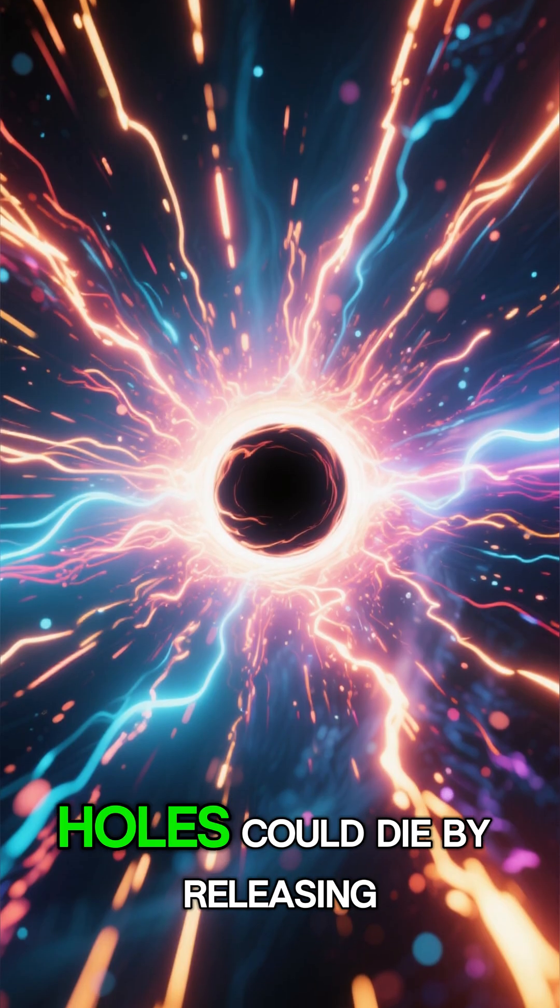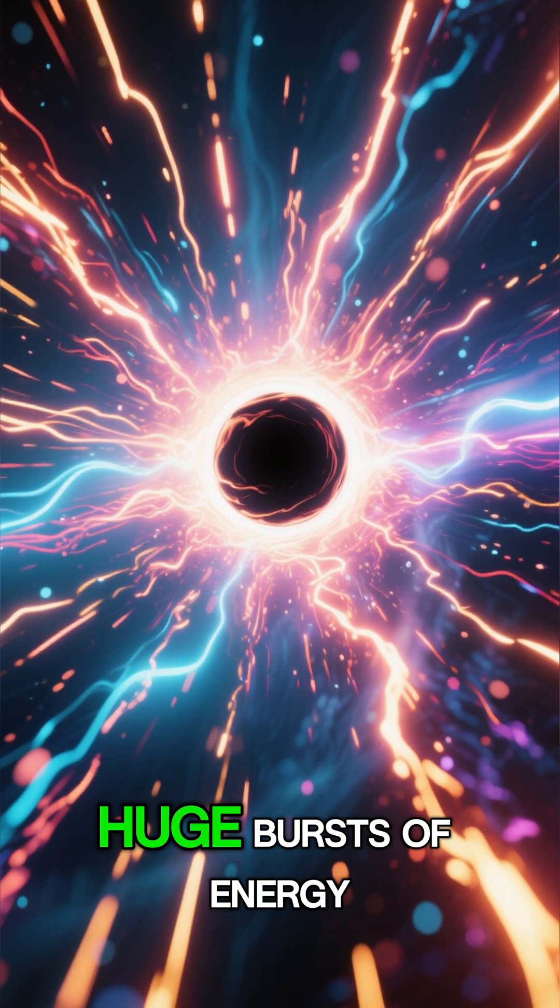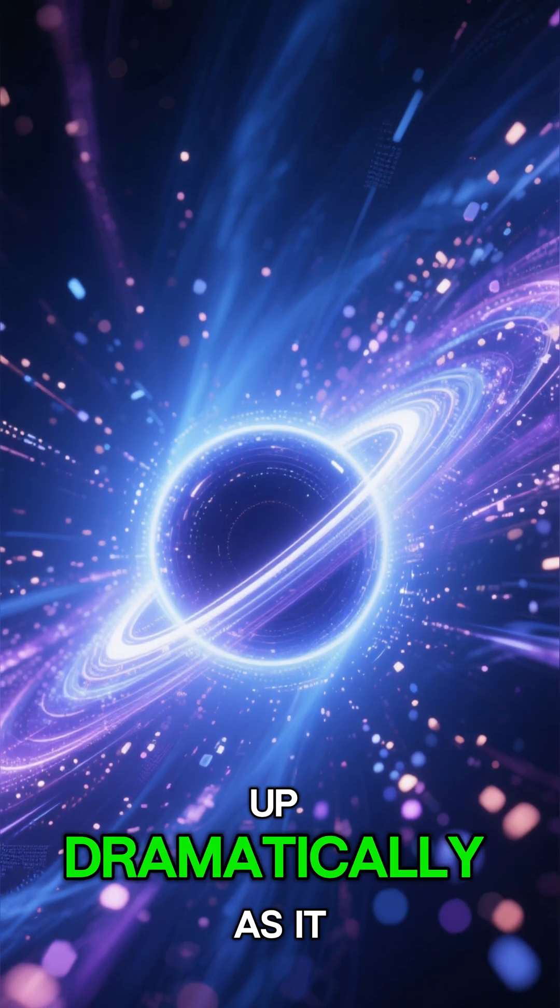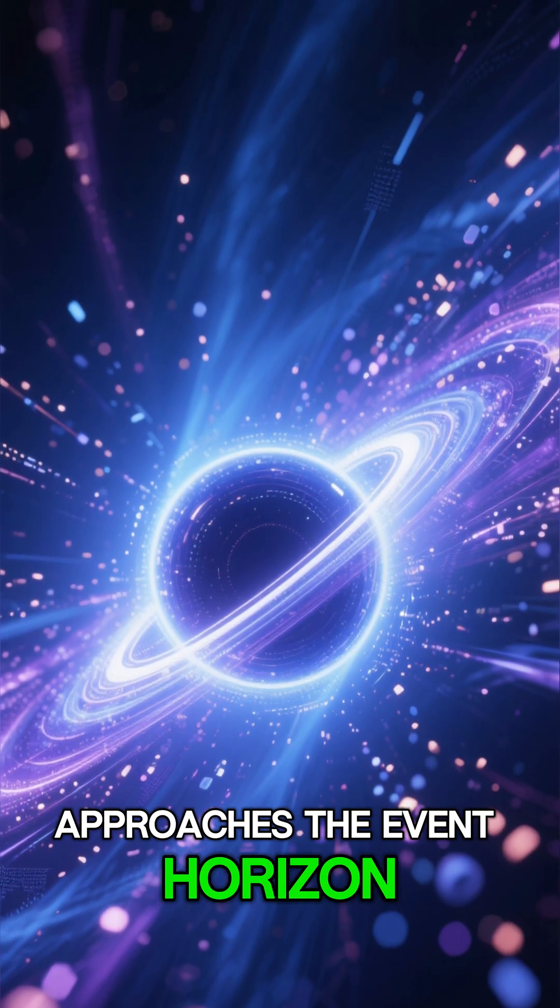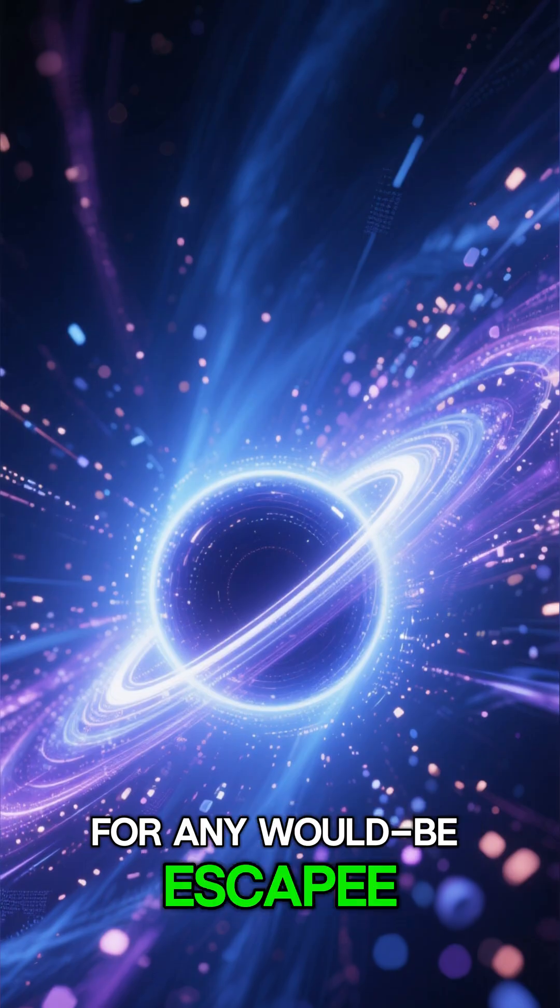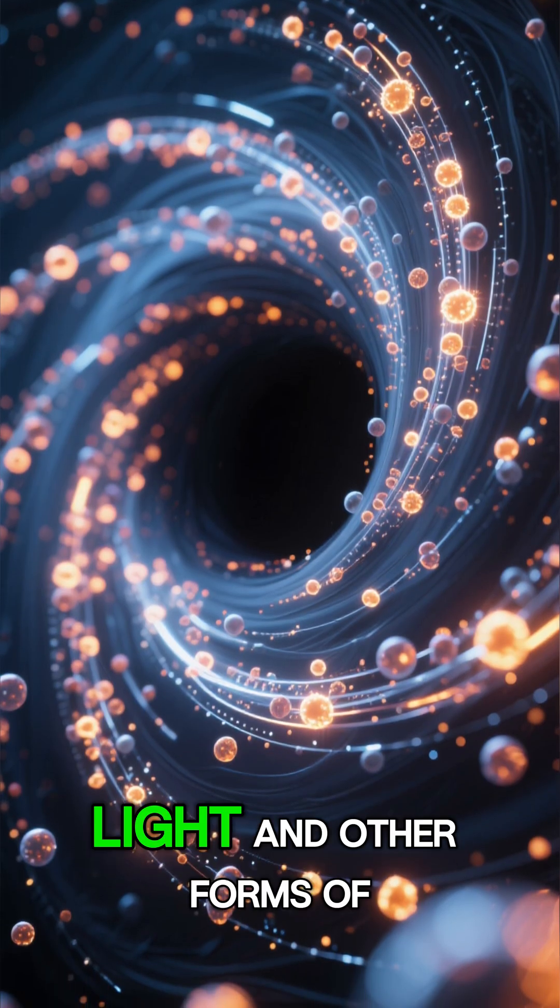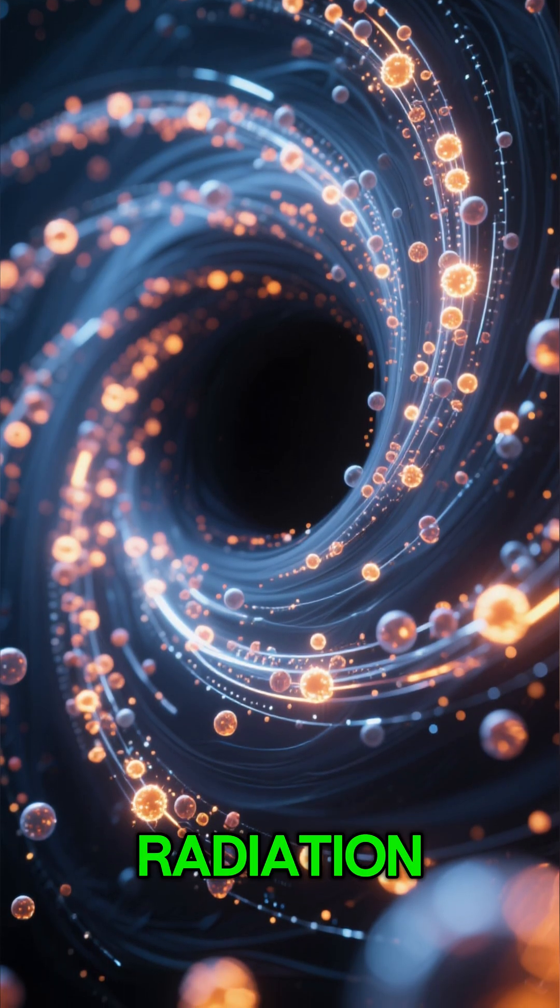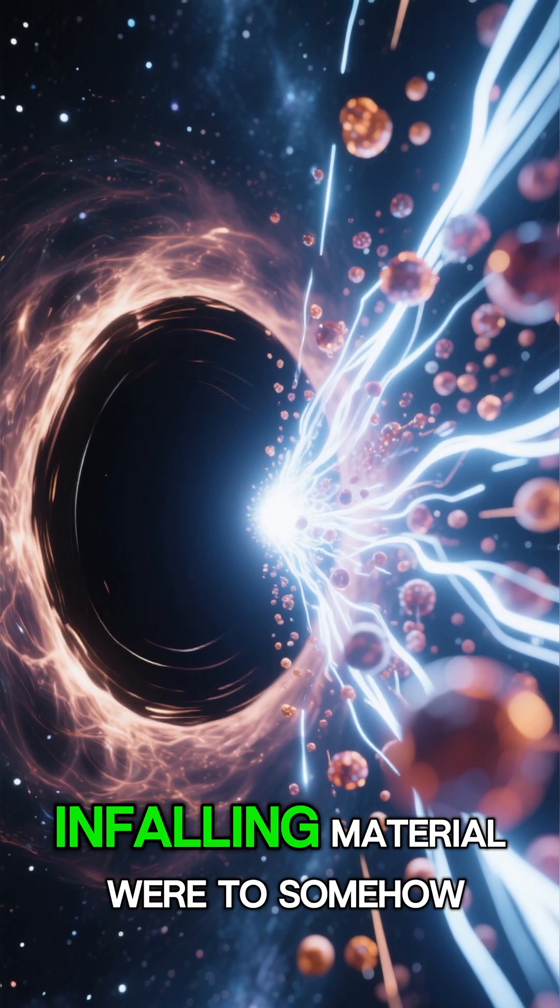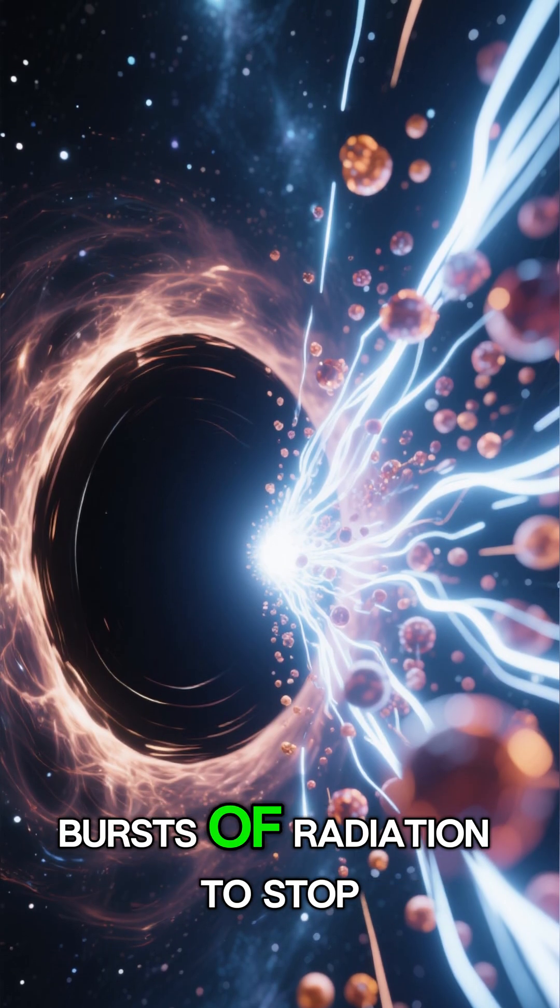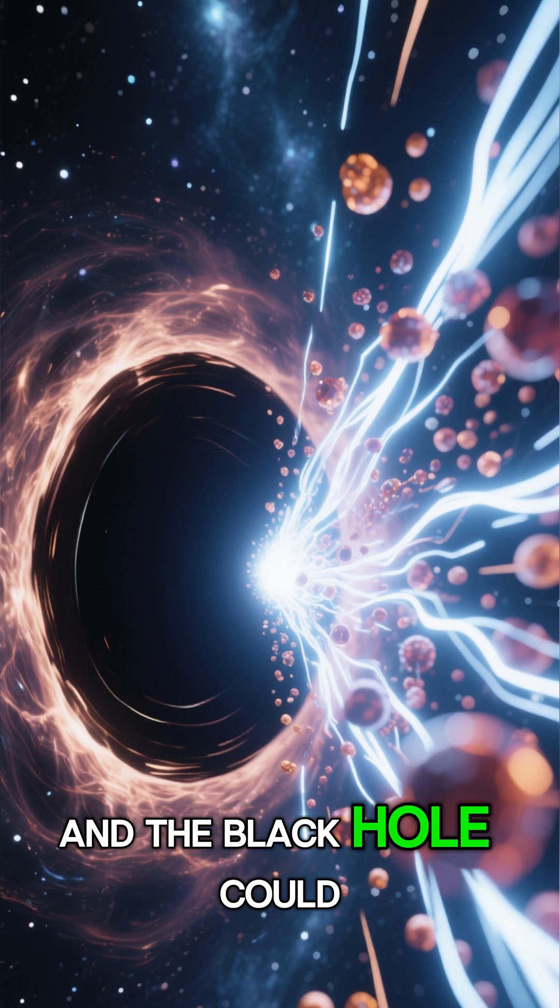One idea is that black holes could die by releasing huge bursts of energy. We know that stuff falling into a black hole speeds up dramatically as it approaches the event horizon, the point of no return for any would-be escapee. As this stuff accelerates, it heats up and gives off light and other forms of radiation. Scientists think that if the infalling material were to somehow slow down, it might cause these intense bursts of radiation to stop and the black hole could die.